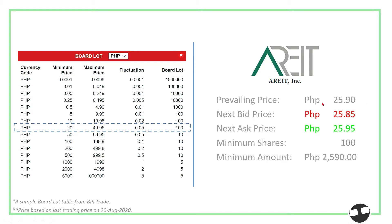The fluctuation of price is by divisibility of ₱0.05. So if the prevailing price is ₱25.90, the next bid price or the lower price is ₱25.85 — that's off by ₱0.05 — and the next ask price or the next higher price is ₱25.95. If you buy 100 shares, that's around ₱2,590.